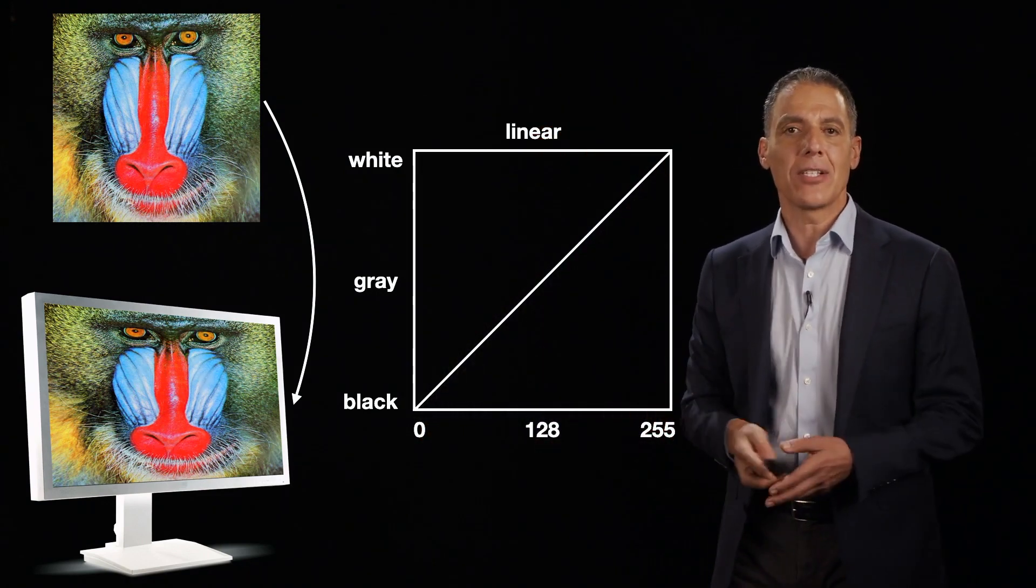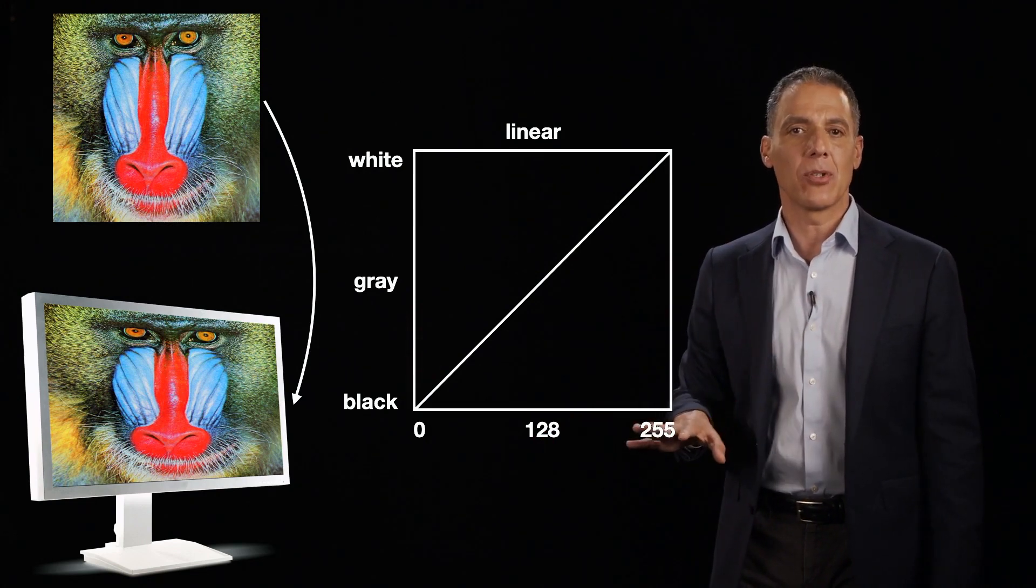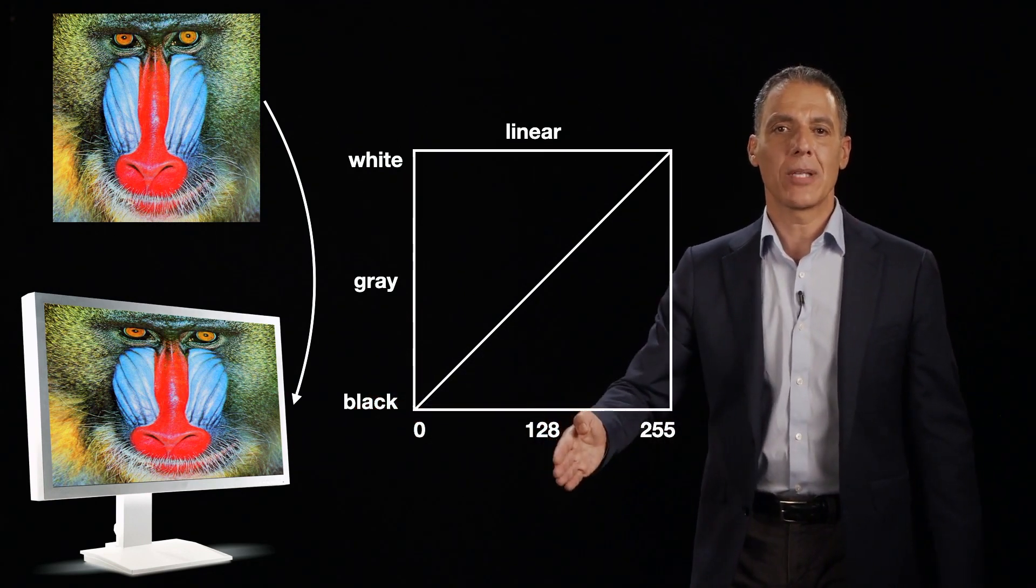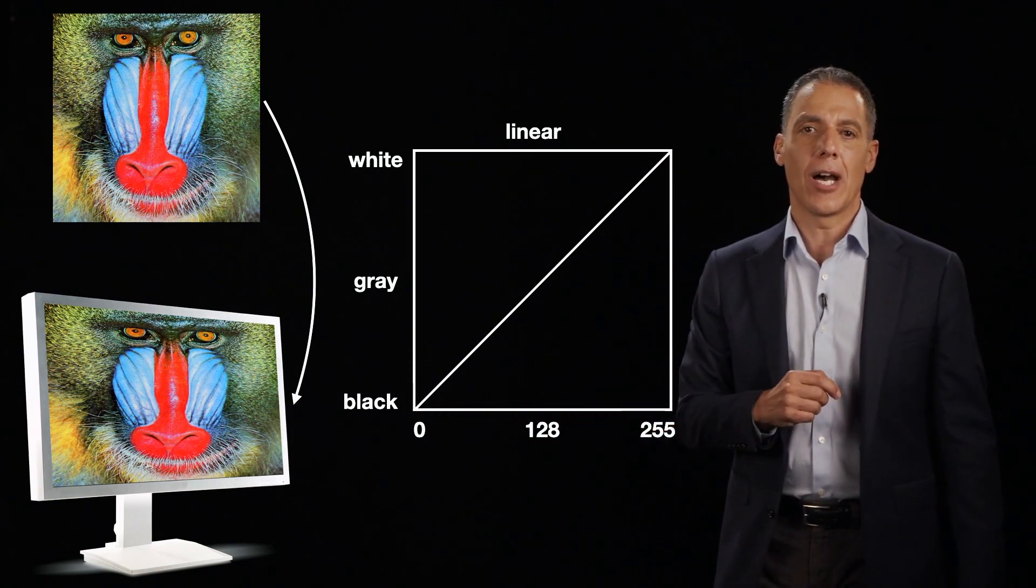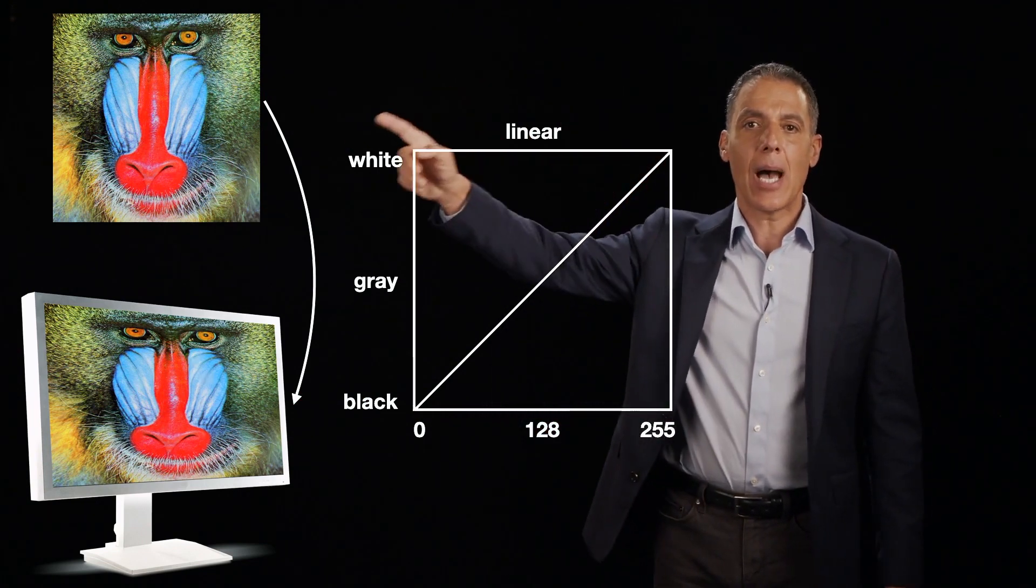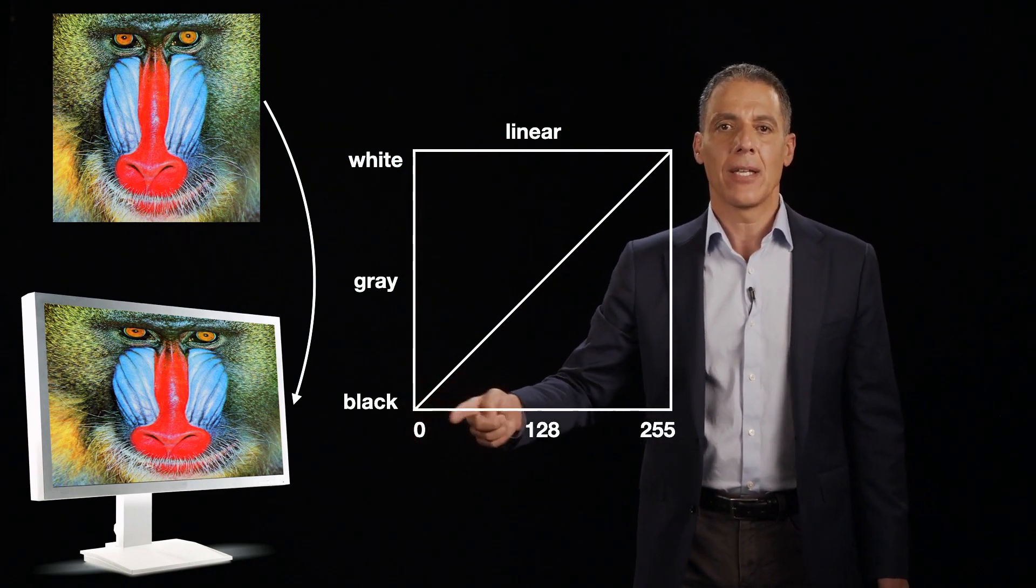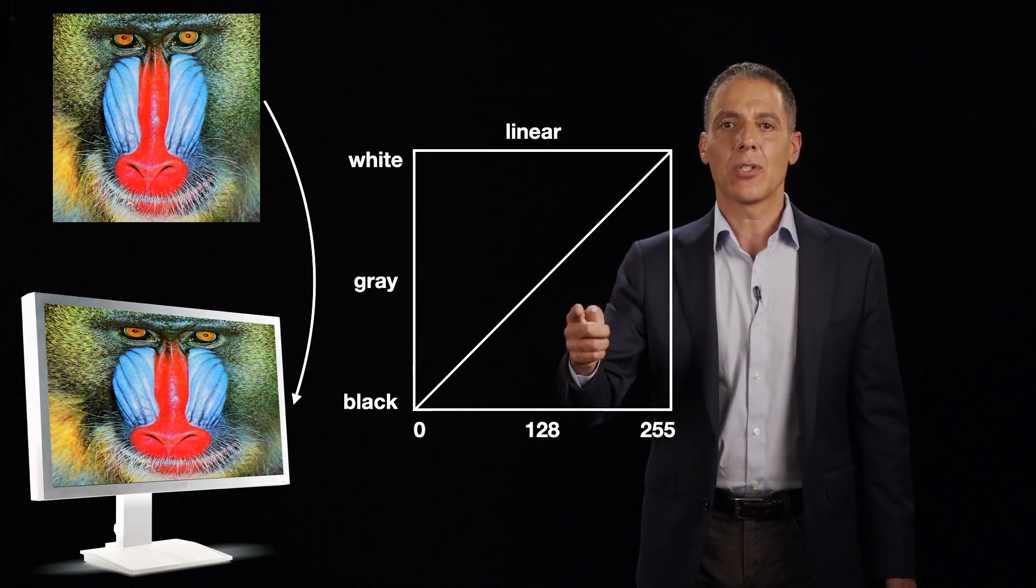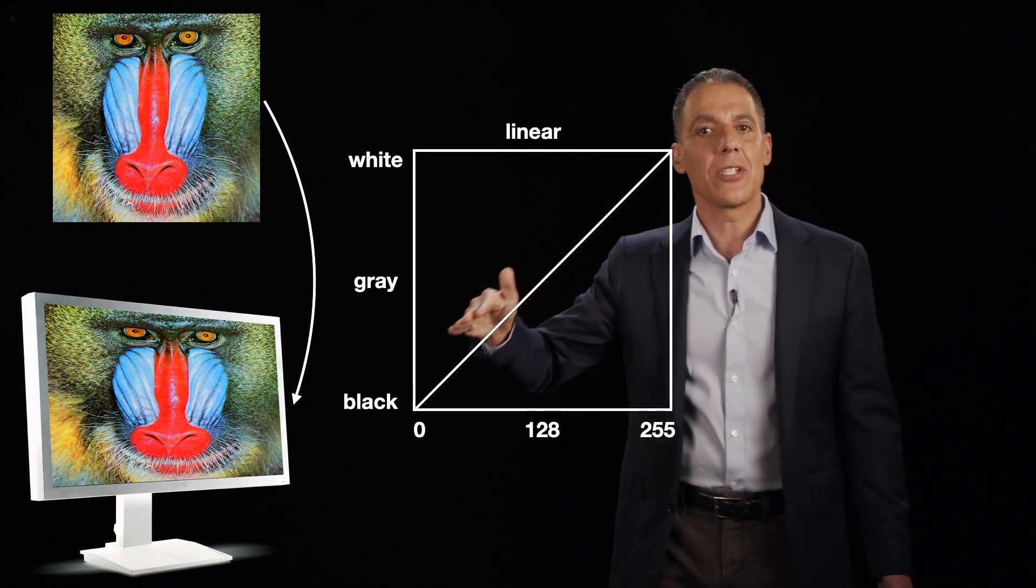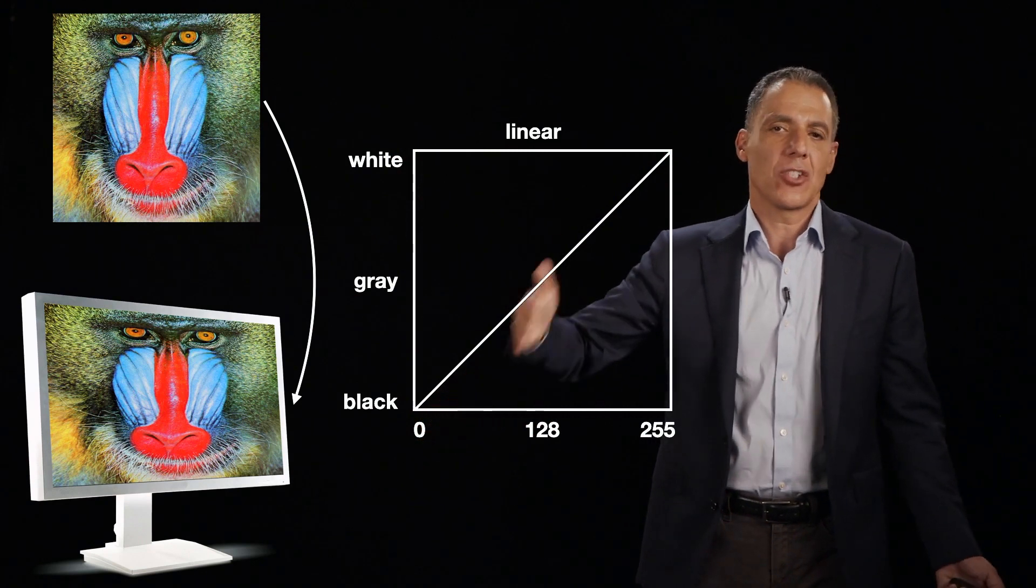And one of the ways to think about these lookup tables, graphically, because it turns out it's gonna allow us to think about different manipulations of the display, is with this 2D lookup table plot. So along the horizontal axis, I have my pixel values. Zero, black, 128 mid-level gray, 255 is white. And then along the vertical axis, I have at the top white, in the middle gray, and the bottom black. And so this line right here is the mapping between pixel values and what is going to be displayed on the screen. In this case, you can see, it's a sensible linear mapping.